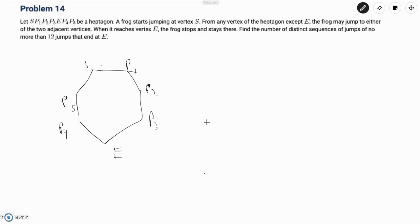When it reaches vertex E, the frog stops and stays there. Find the number of distinct sequences of jumps of no more than 12 jumps that end at E.